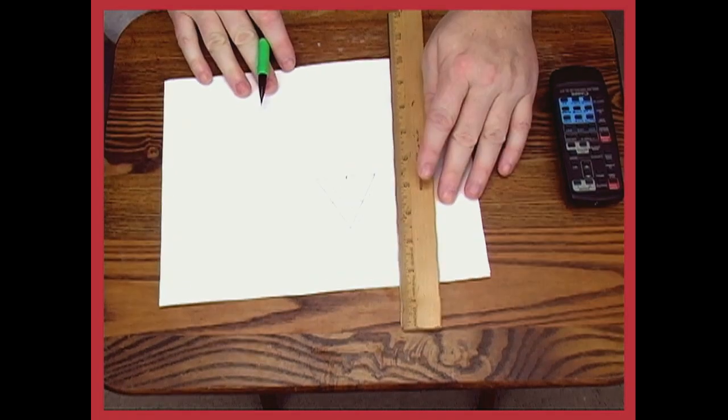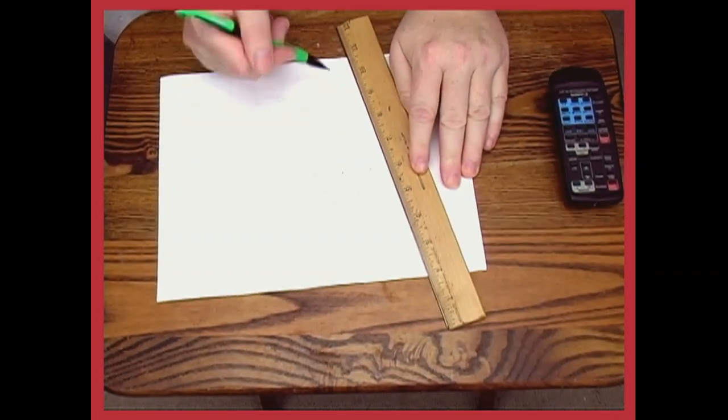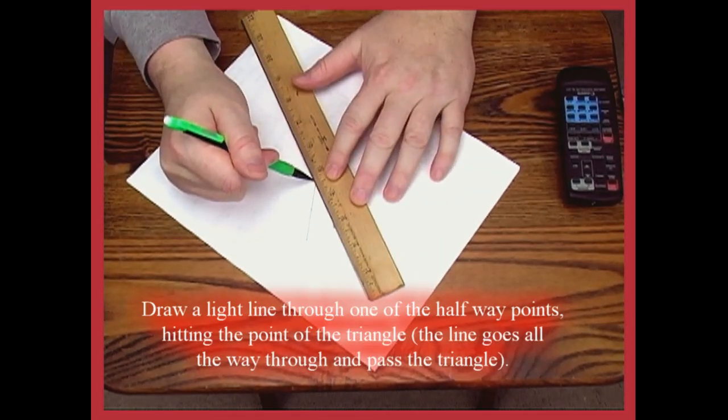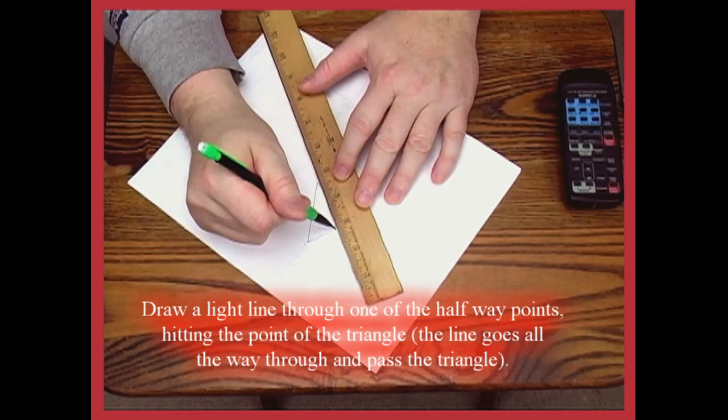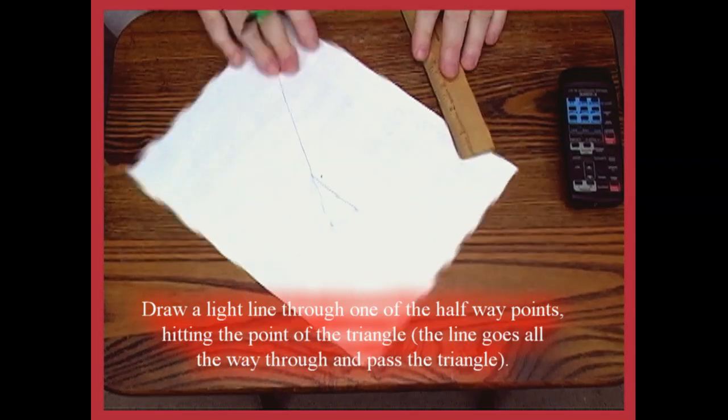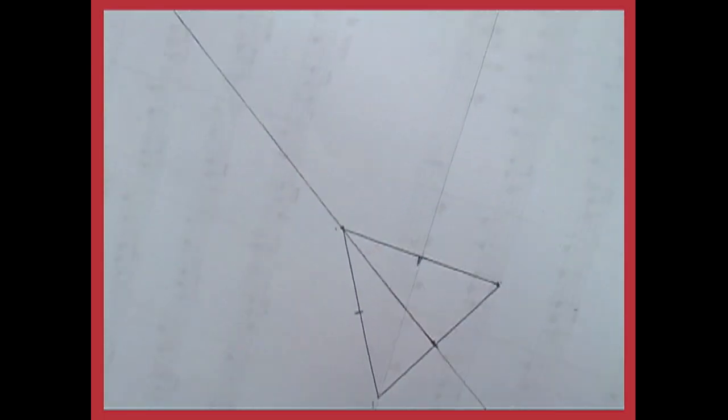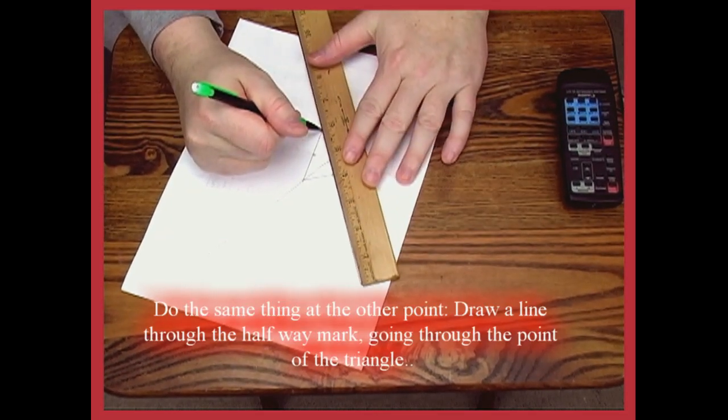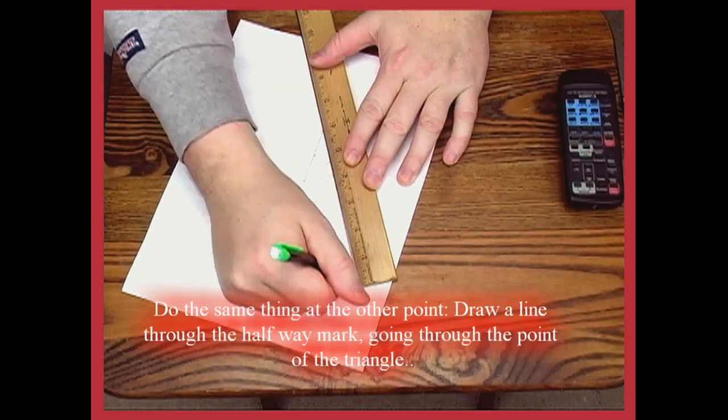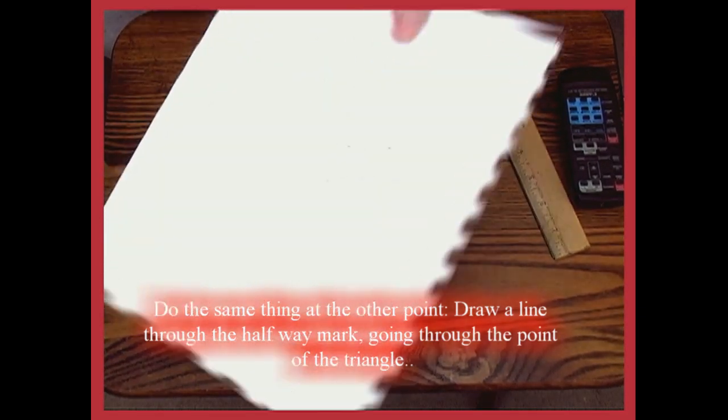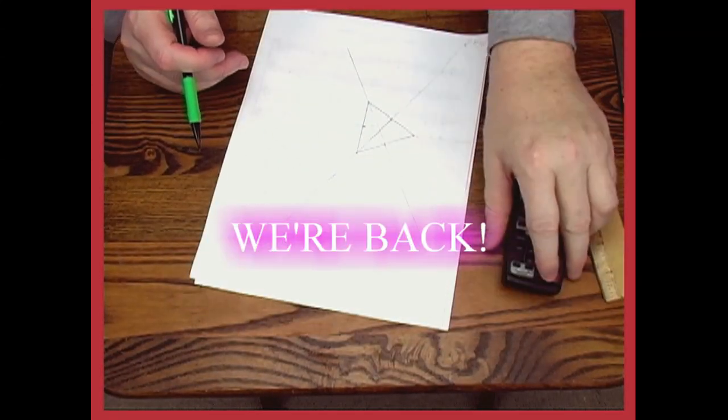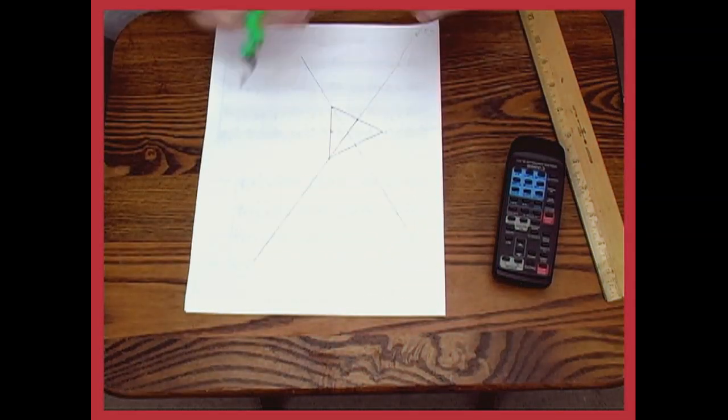We now need to take our ruler. I'm going to take my ruler to this halfway point, line it up with the point of the triangle, and put another very light line straight through on both sides like that. And then I'm going to do the same thing over at this other point.